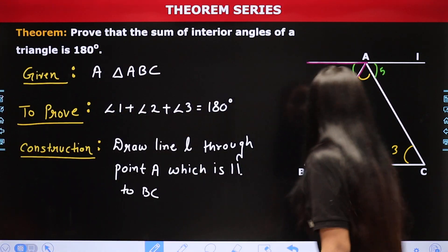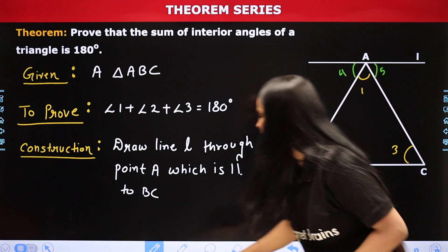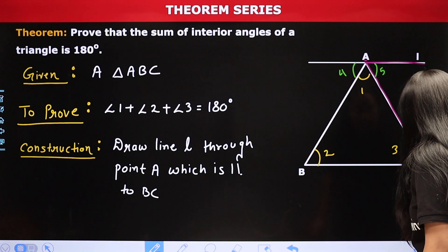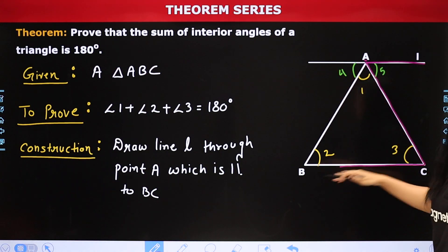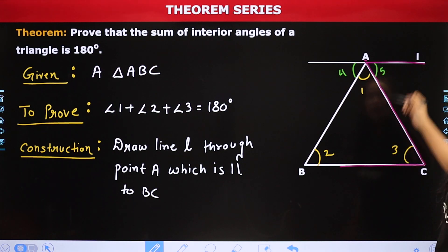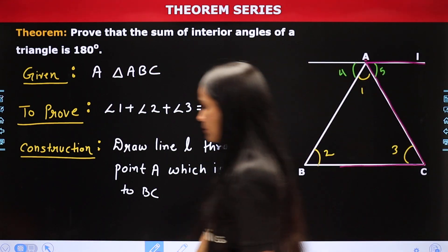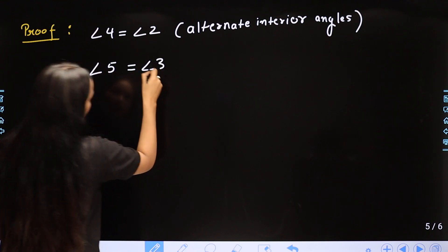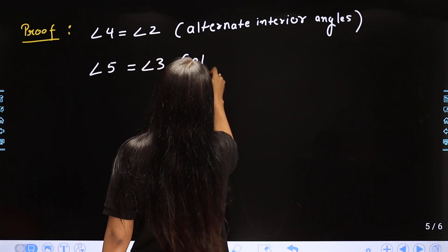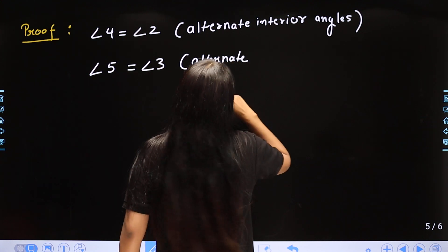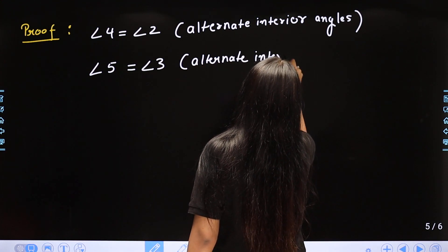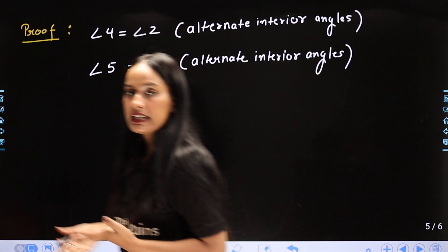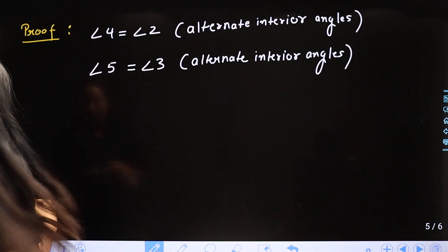इसी तरीके से, इधर भी Z देख सकते हो — उल्टा है तो क्या हुआ। यह line L, BC से parallel है। Z दिख रहा है, तो angle 5 is equal to angle 3। Same reason: alternate interior angles are equal। Lines parallel हैं, transversal दिख गया, alternate interior angles equal होते हैं।